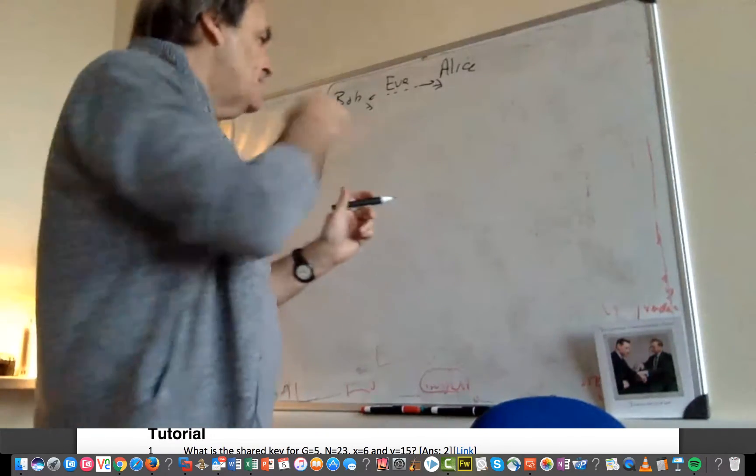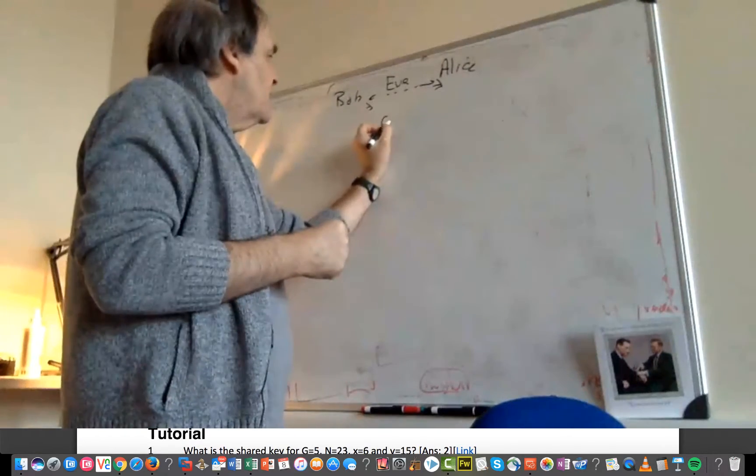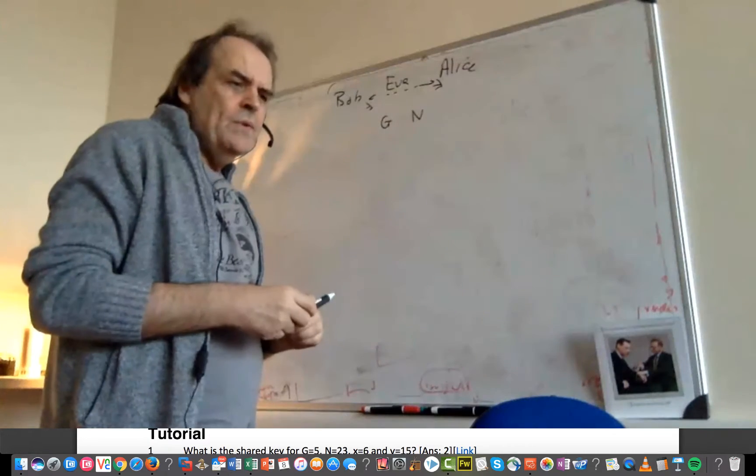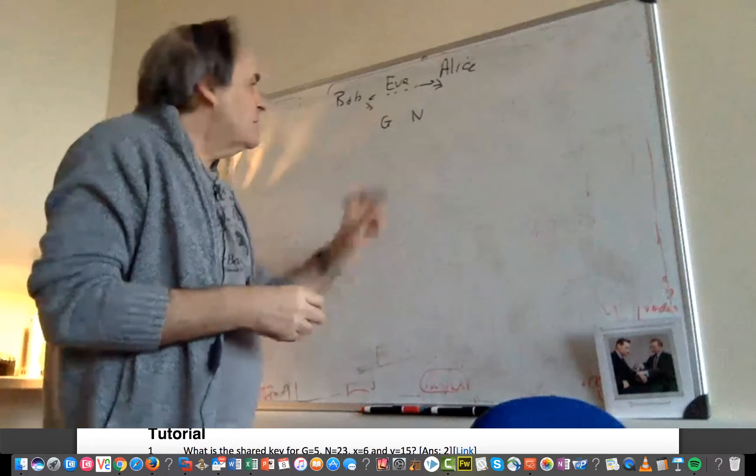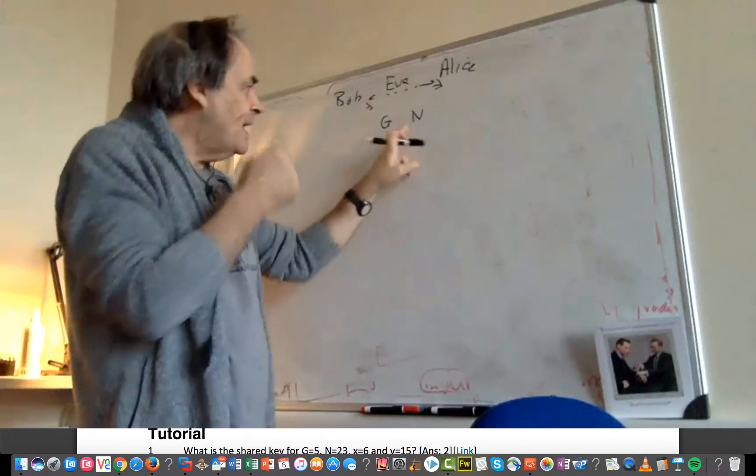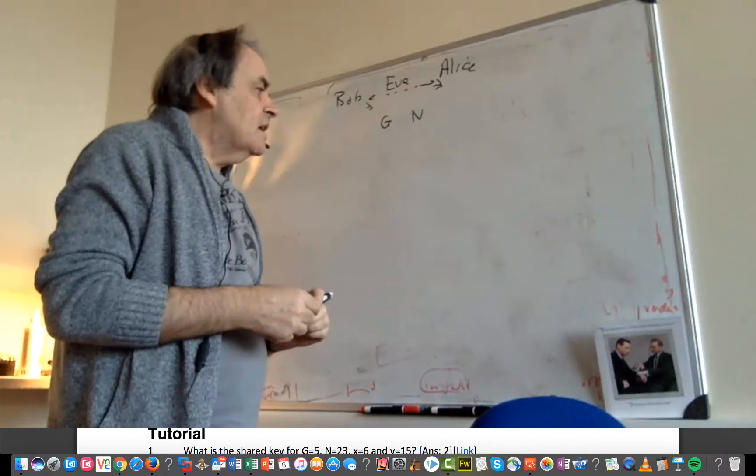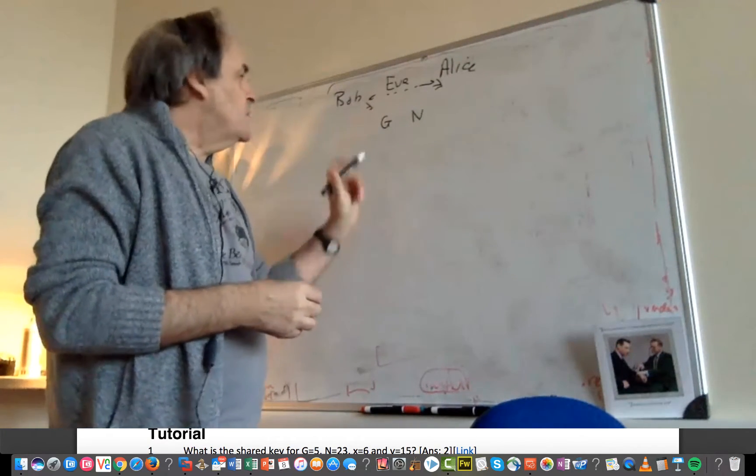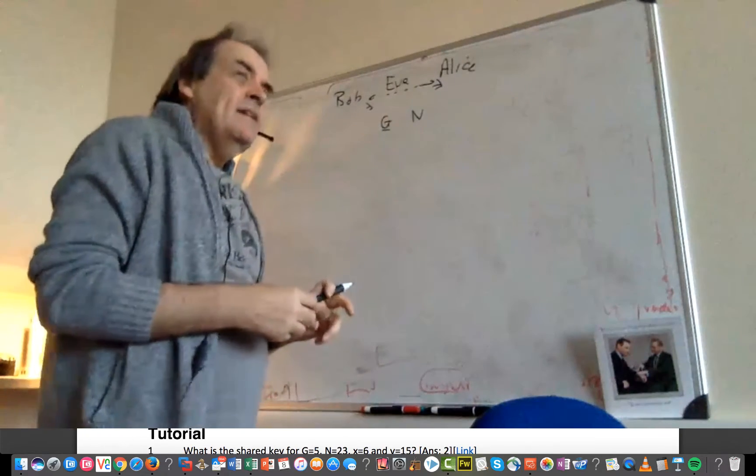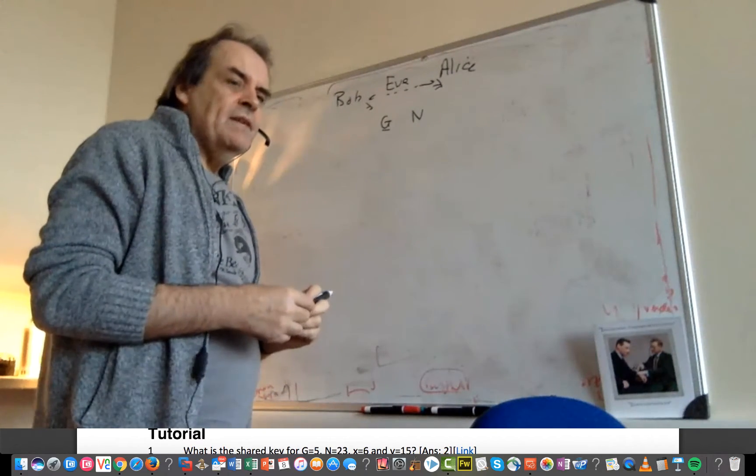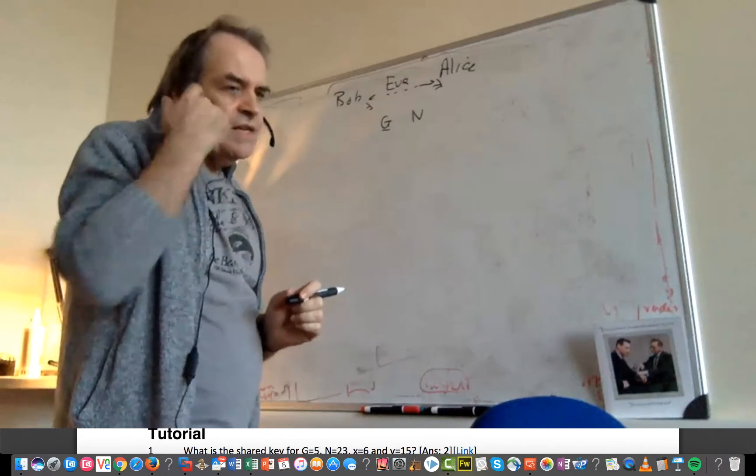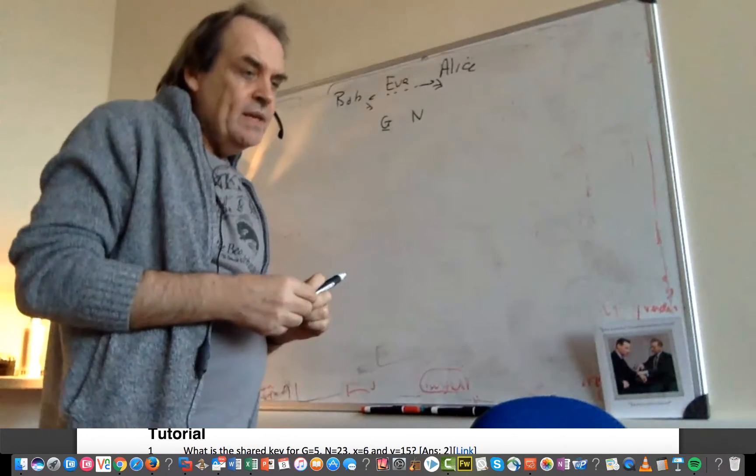So the start of this is a value called G, which is the generator, and N. G has to be picked carefully, but we'll just select some values. And N itself is a prime number, and we'll see how that works.